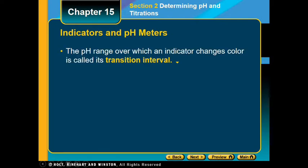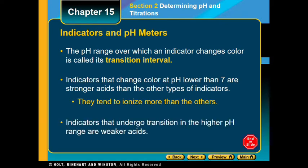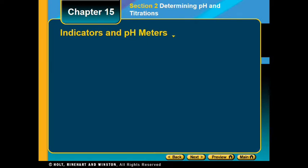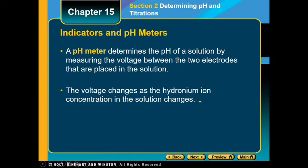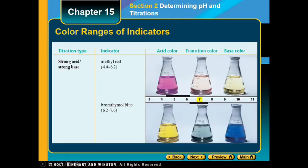The pH range over which indicators change color is called the transition interval. Color changes at a pH lower than 7 correspond to stronger acid indicators that ionize more. Indicators that undergo transition in the higher pH range are considered weaker acids. A pH meter uses two electrodes to determine pH — the voltage changes as the hydrogen ion concentration changes, giving a more precise reading than indicators.